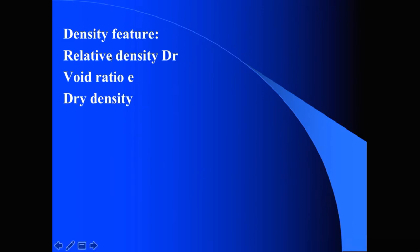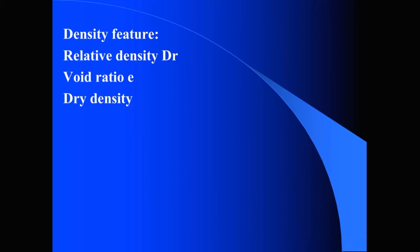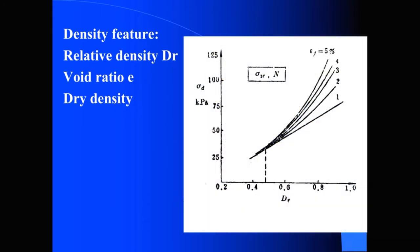Now let's see the density factor. For density, we will use many parameters, but these three are related to liquefaction. One is relative density DR. The second is void ratio, which is used to describe how much void space exists. And the third is dry density, which means in a unit volume, how much is solid particles.